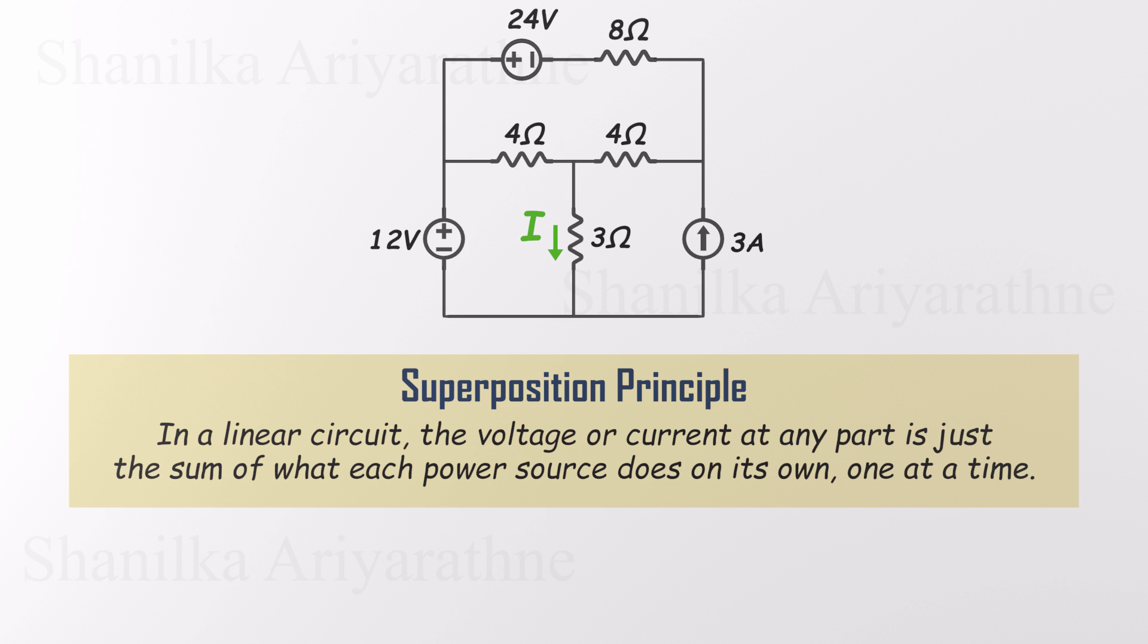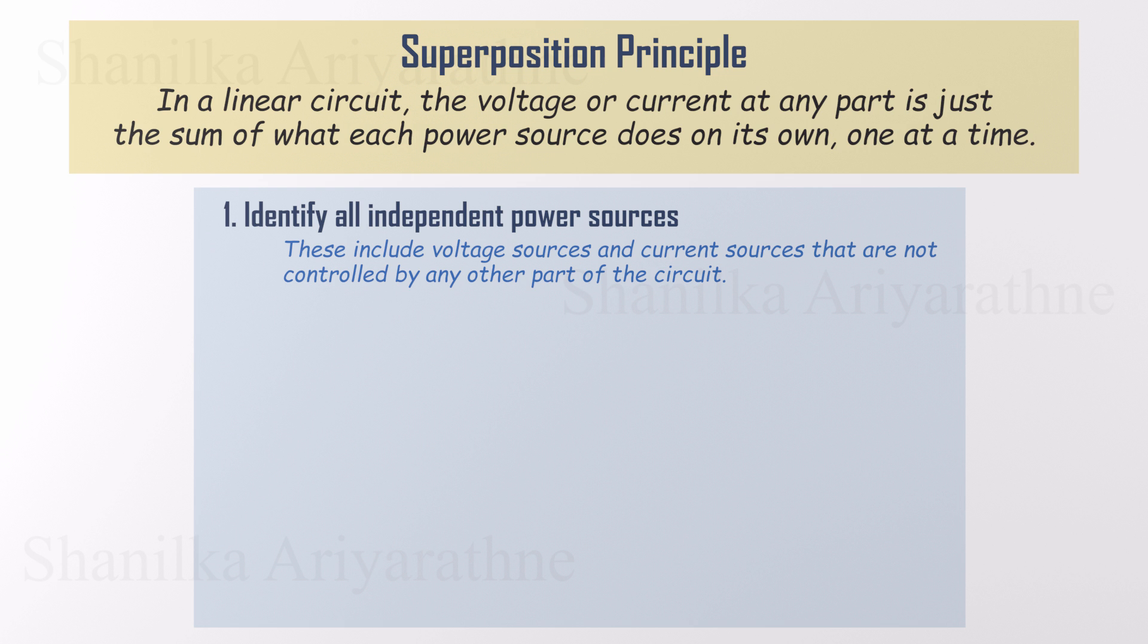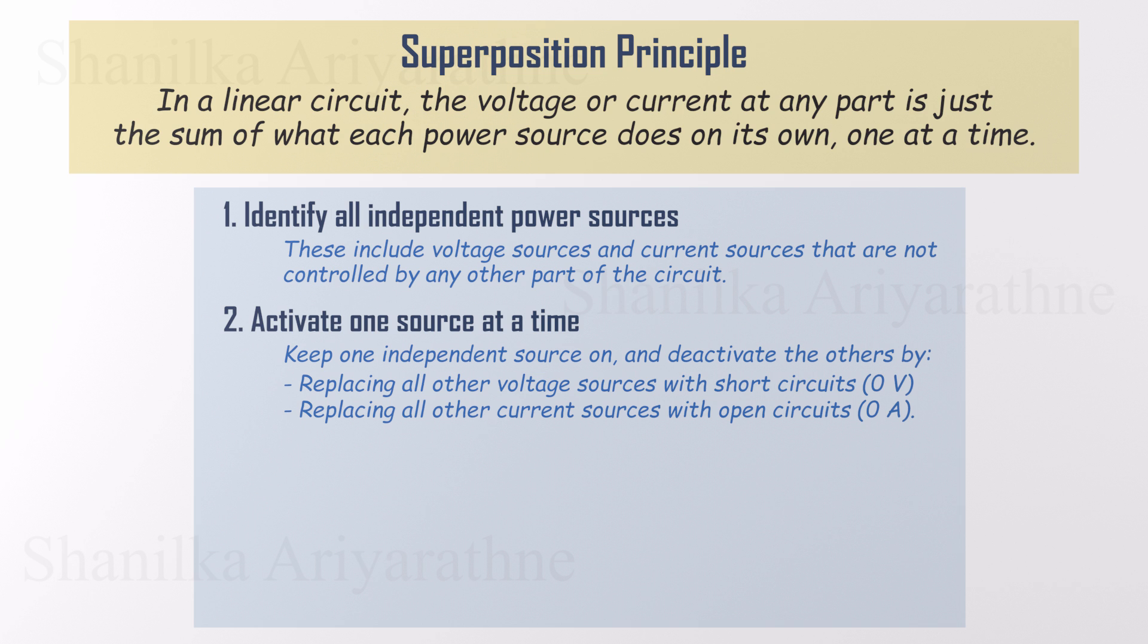Let's quickly go over how to use the superposition theorem. It's simple once you get the idea. Step 1: Identify all the independent sources, voltage or current. Step 2: Turn on one source at a time and turn off the others. A voltage source becomes a short circuit when deactivated. A current source becomes an open circuit.